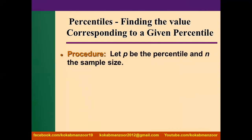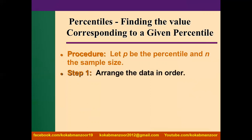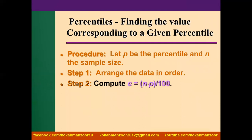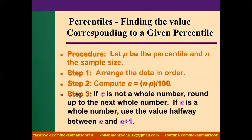Now, what if we have the percentile and want to find the corresponding value? Let P be the percentile and N the sample size. First arrange the data, then use the formula: C = N × P ÷ 100. If C is not a whole number, round it up to the next number. If C is a whole number, use the value halfway between the C-th and (C+1)-th values — take the average of those two.